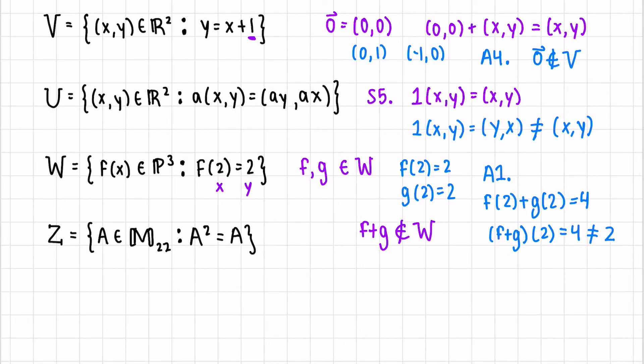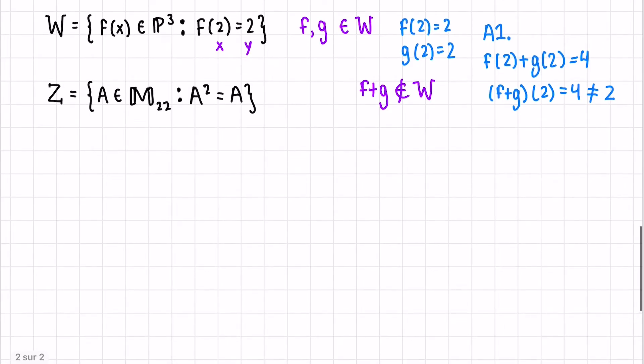We need to be able to add two vectors, or in this case, two polynomials, and get another polynomial with the same property. Let's take a look at our last example.